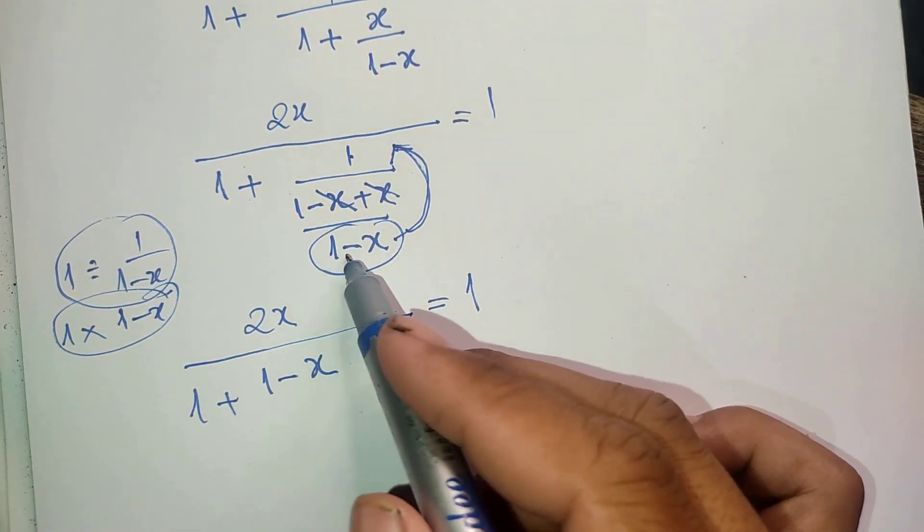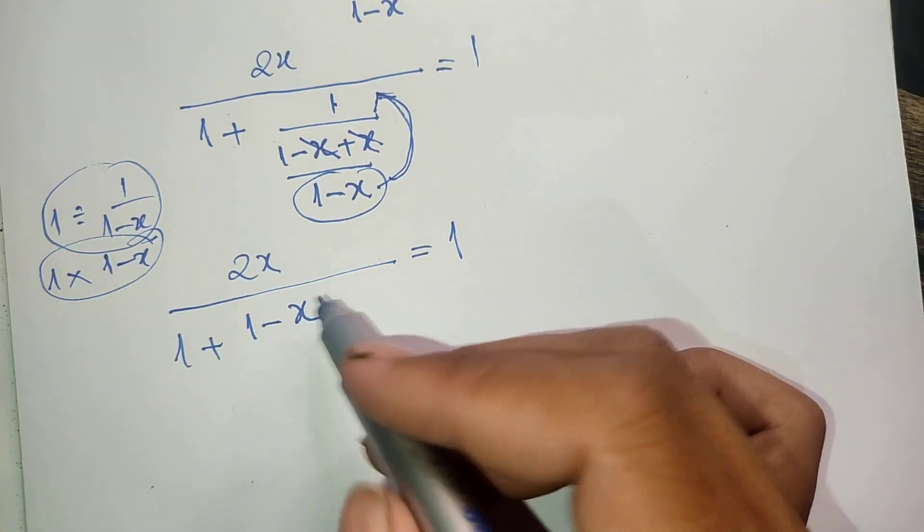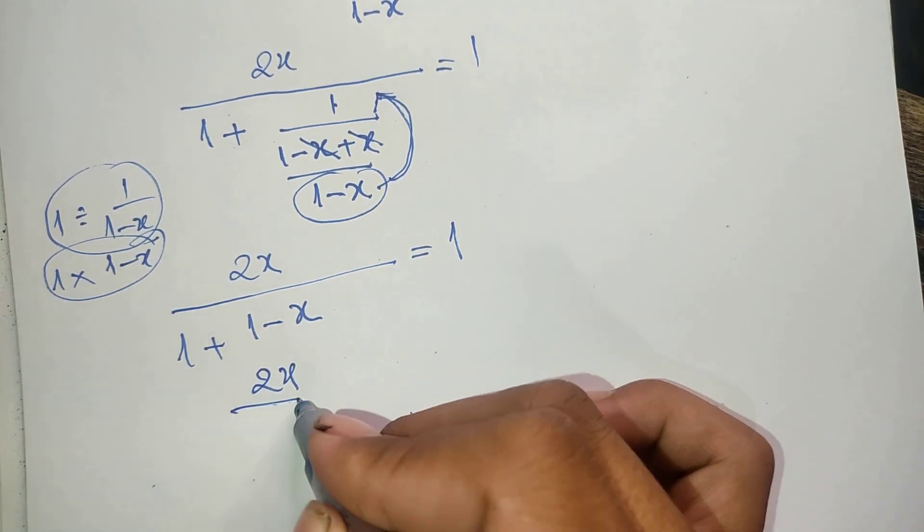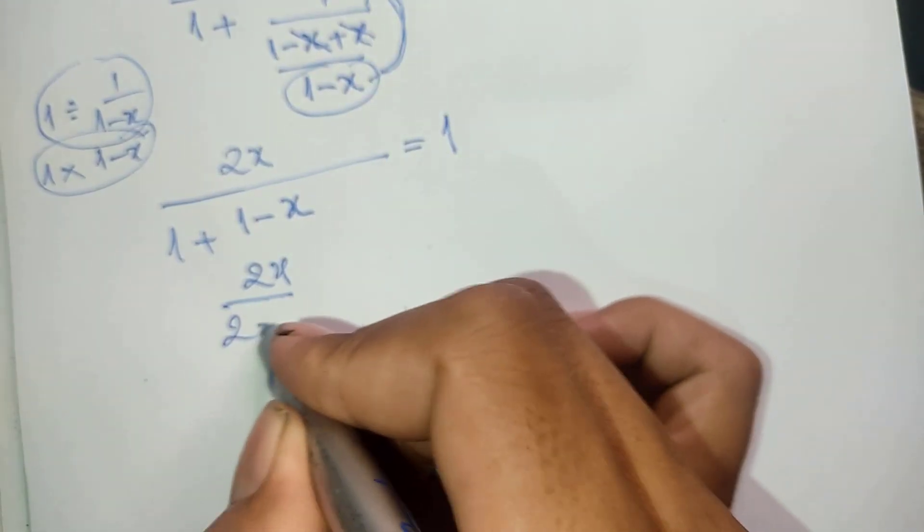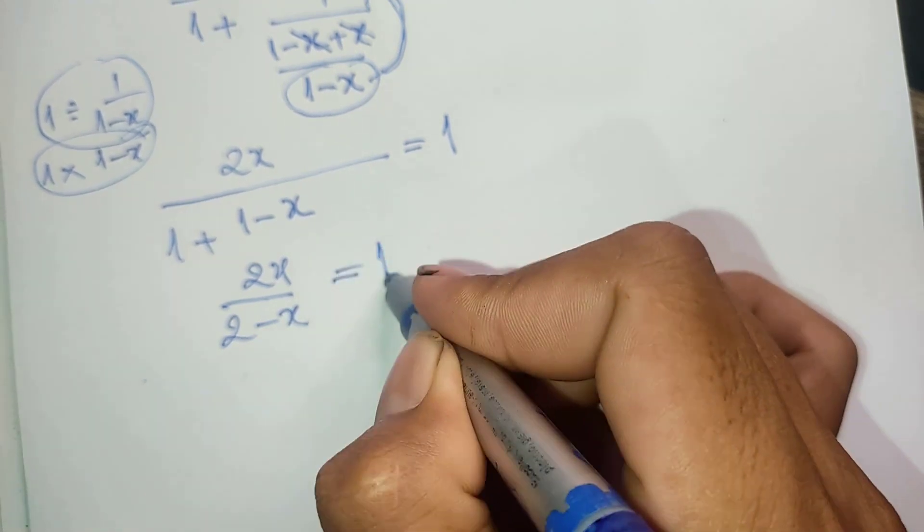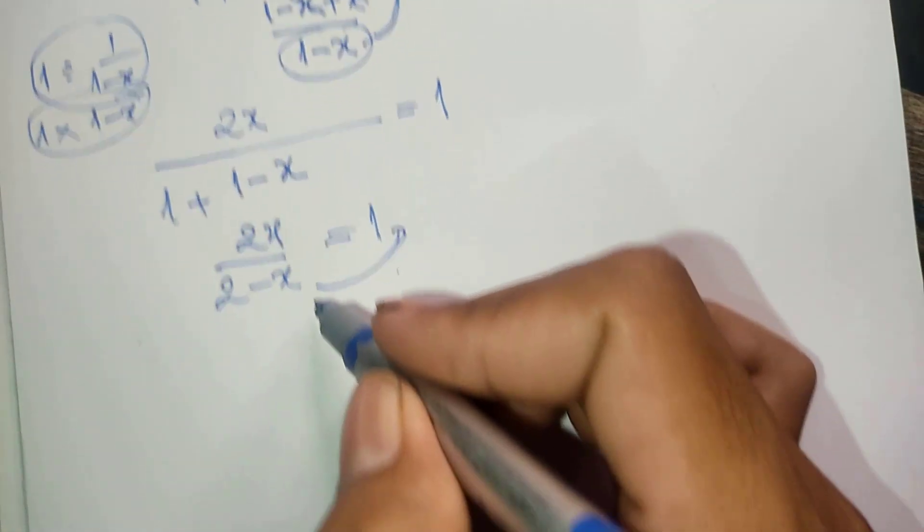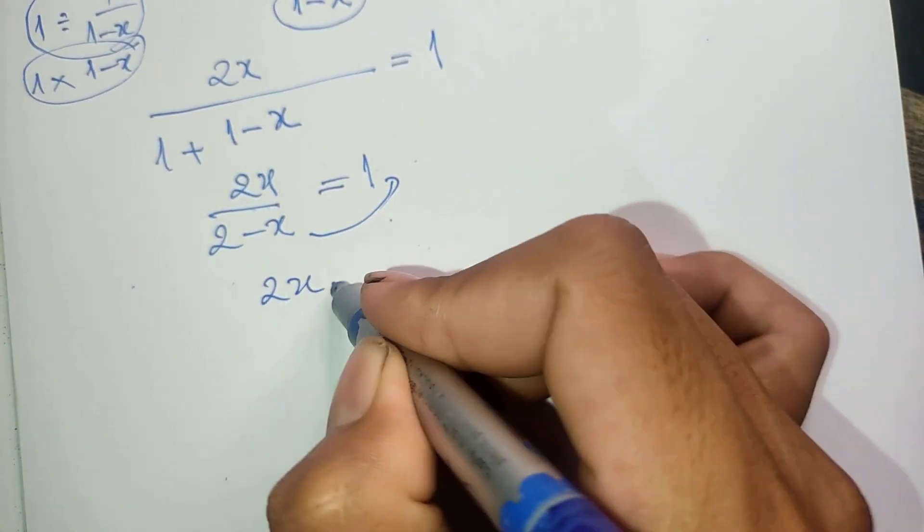And now this we get 2x divided by 2 minus x equals 1. So now I take 2 minus x to the right-hand side, so I get 2x is equal 2 and minus x.